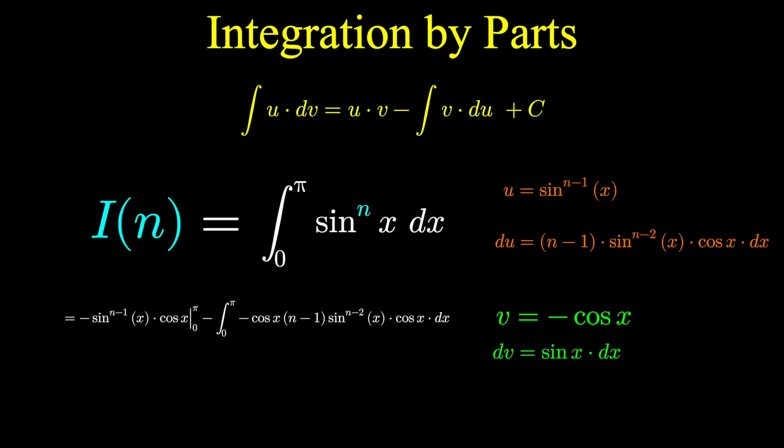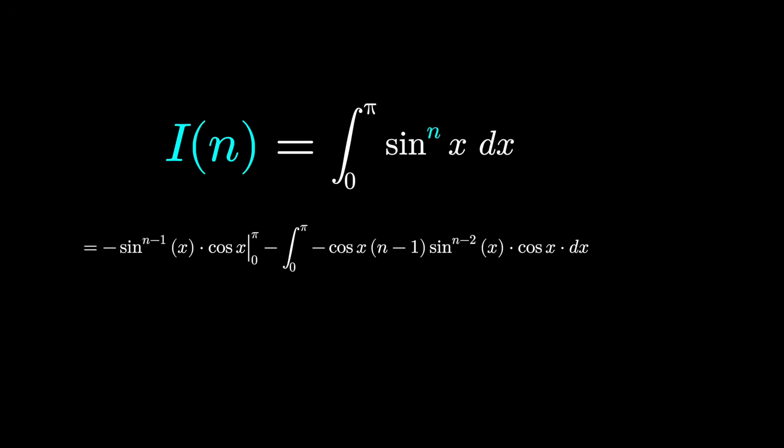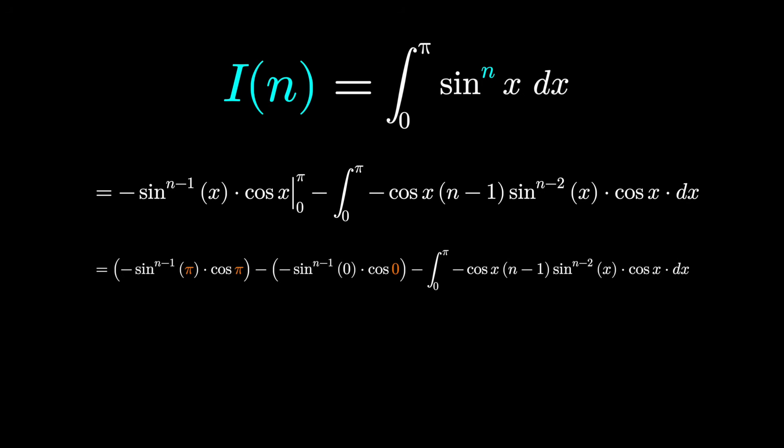Integration by parts is uv minus the integral of vdu. And already this looks fairly clunky, but a few nice things happen. Notice if we evaluate this first part from zero to pi, substituting pi gives us zero. Sine of pi is zero. Plugging in zero also gives us zero.